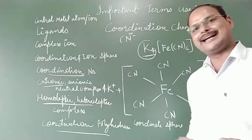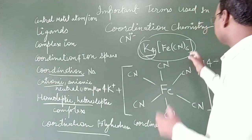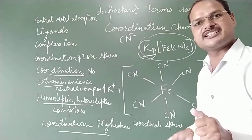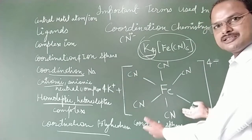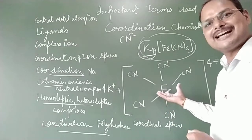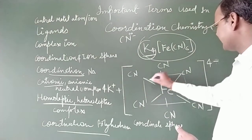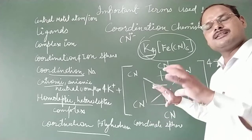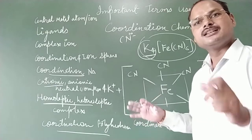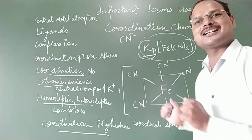The next term is coordination polyhedron. When we arrange all the atoms of the coordination sphere in three-dimensional space, we get a specific geometry. You can see here — by joining these atoms you get an octahedral geometry. The spatial arrangement of the coordination sphere in three dimensions is known as the coordination polyhedron. I hope all these terms are clear to you.